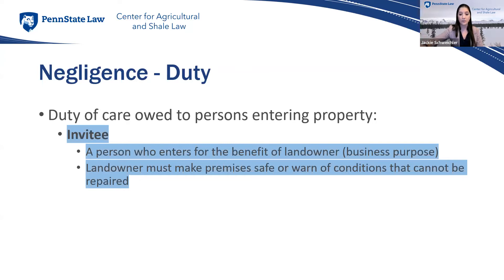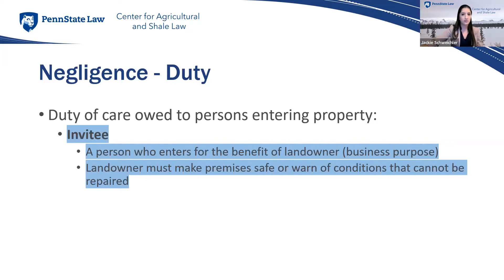Most important for your business is an invitee — a person who enters for the benefit of the landowner for a business purpose. You are obligated to make the premises safe or warn of conditions that cannot be repaired. If you have a broken porch step, fix it. If you can't fix it until next week, warn every single business guest. Never assume what people will or won't see — you may have visually impaired guests. Keeping premises safe for business invitees is a very high standard requiring vigilant, routine inspection.